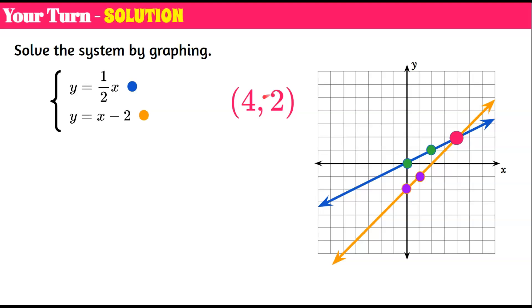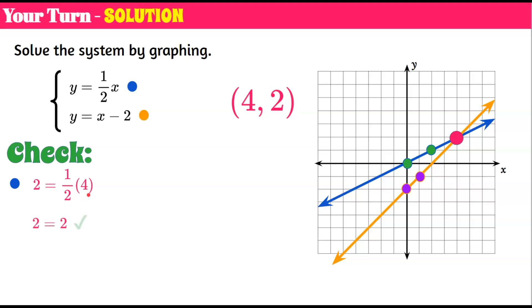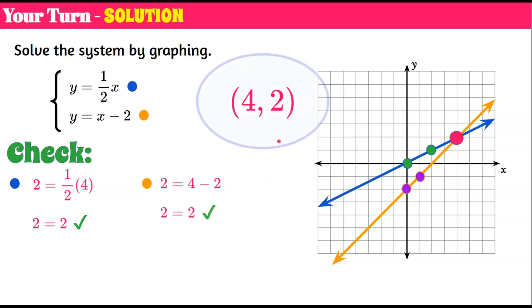Step three: check the solution by replacing x with 4 and y with 2. For the blue equation: one half times 4 is 2 — it checks! For the second equation: 4 subtract 2 is 2 — it checks! Therefore, the solution of this system is the ordered pair 4, 2.